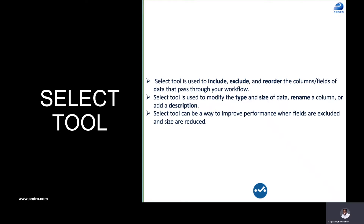You can also modify the data type of your fields. For example, whenever you drag a CSV file into Alteryx, Alteryx automatically sets all fields to the string data type. The select tool will help you make necessary modifications to where you want to change the data type. If you have a price field as a string, you cannot multiply or do arithmetic operations with that field because there's a restriction — you cannot do arithmetic operations on a string data type.